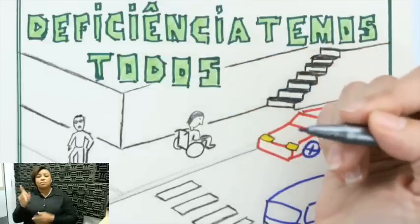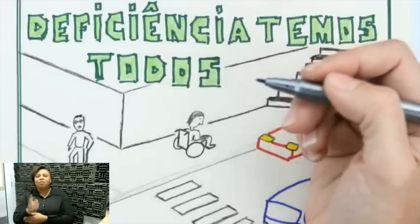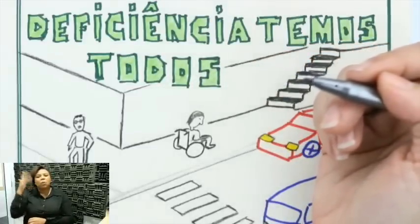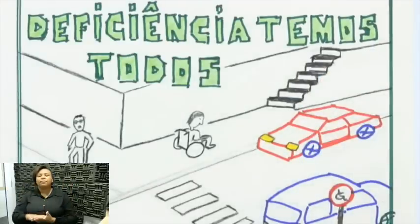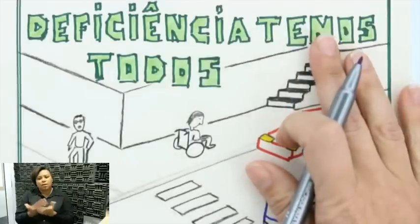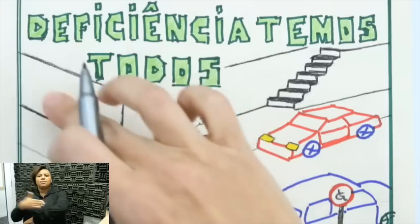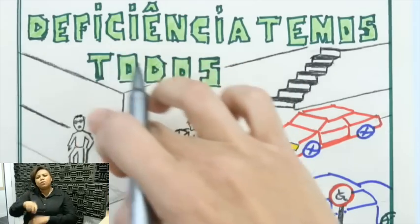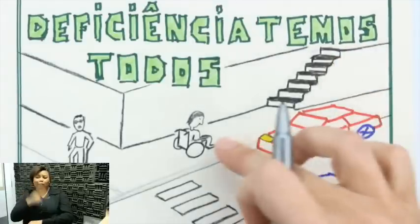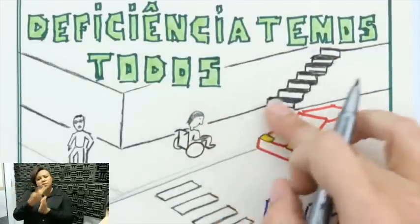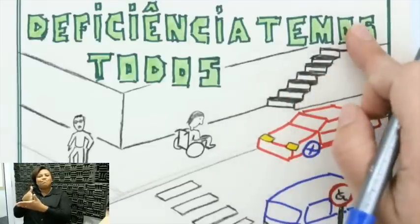Nessa aula de hoje, que vocês já devem estar vendo, ouvindo ou imaginando que é sobre deficiência, estou começando com uma imagem que é a capa da aula: está desenhada a esquina de uma rua. Desenhei um cadeirante de frente para uma escada, que impede o acesso ao prédio que ele quer chegar.